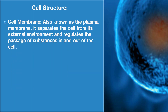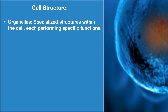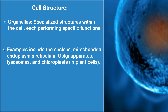First, we take up cell structure. The cell membrane, also known as the plasma membrane, separates the cell from the external environment and regulates the passage of substances in and out of the cell. The cytoplasm is a gel-like substance inside the cell where organelles are suspended. These organelles are specialized structures performing specific functions — examples include nucleus, mitochondria, endoplasmic reticulum, Golgi apparatus, lysosomes, and chloroplasts in plant cells.